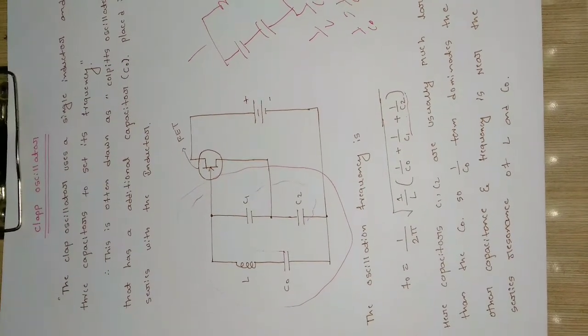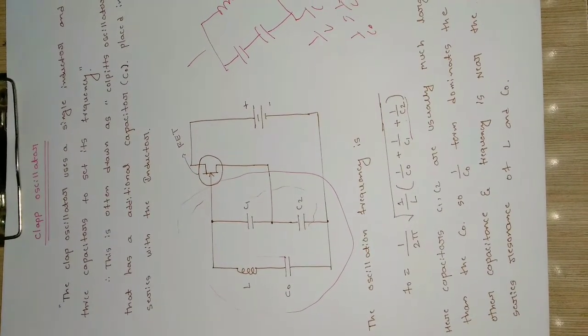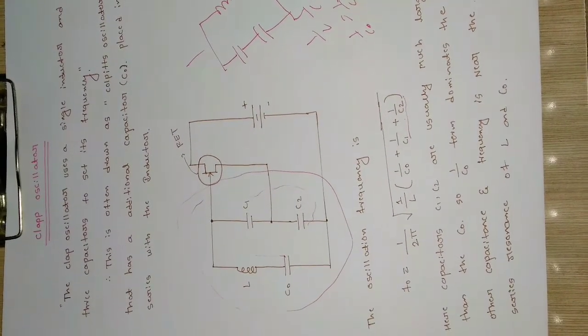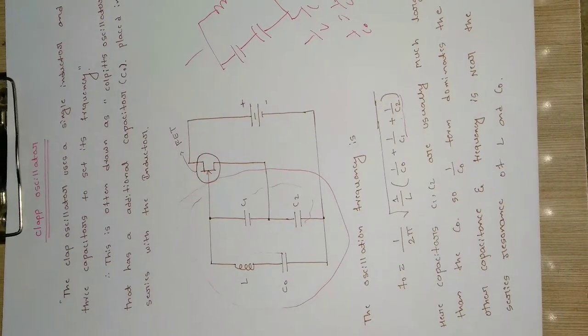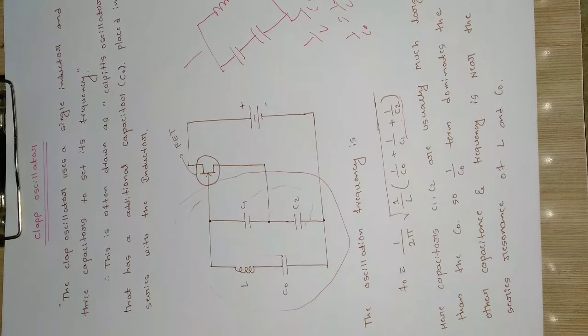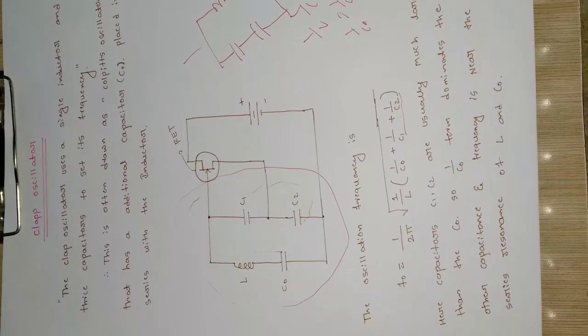This is to make the output of the Colpitts oscillator stable. We are using the third capacitor in series with the inductor. That is the only difference between the Colpitts oscillator and clap oscillator. It has more thermal stability and the frequency of this clap oscillator is greater compared to the Colpitts oscillator.